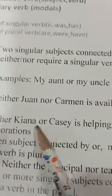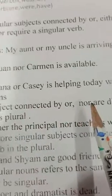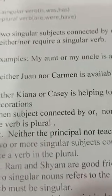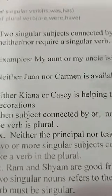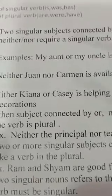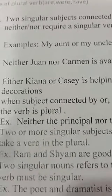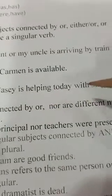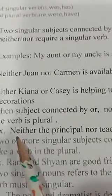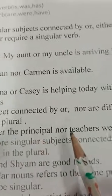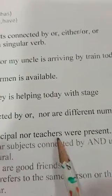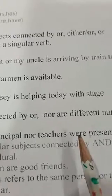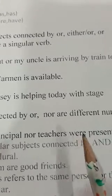Rule number two says: when subjects connected by 'or/nor' are different in number, the verb is plural. For example: 'Neither the principal nor the teachers — present.' Here 'teachers' is plural, so the verb will also be plural. The answer is 'were'.